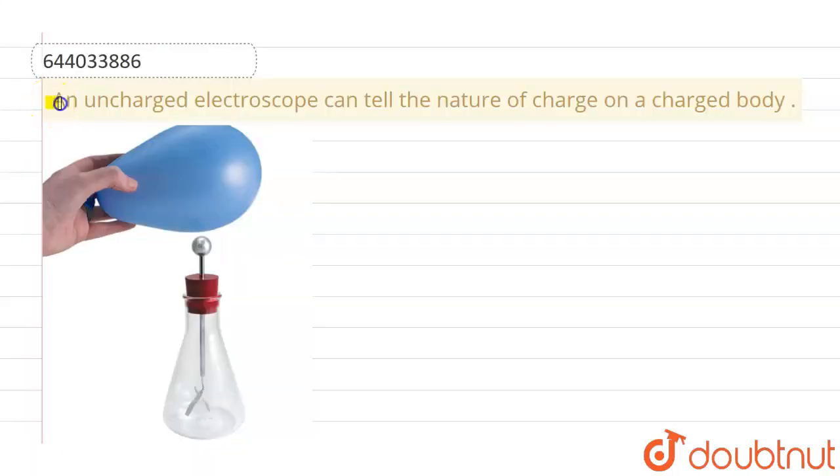The given question is: an uncharged electroscope can tell the nature of charge on a charged body.